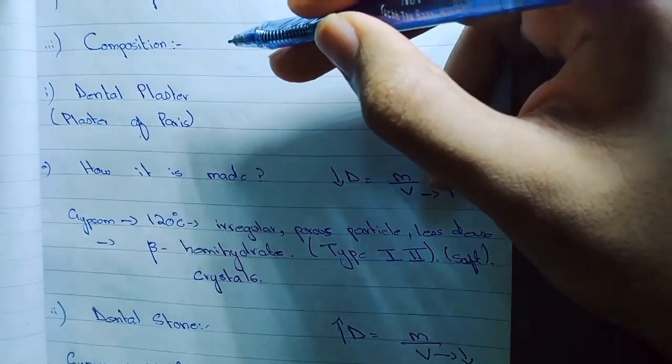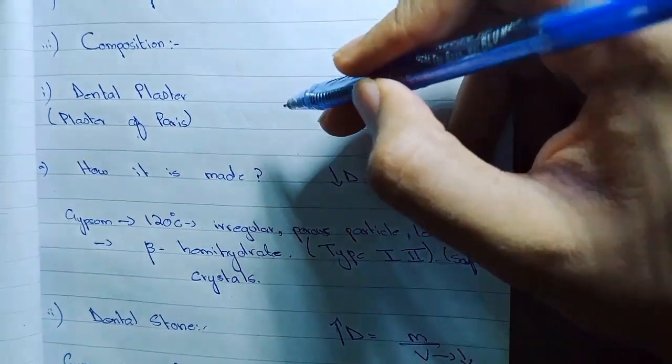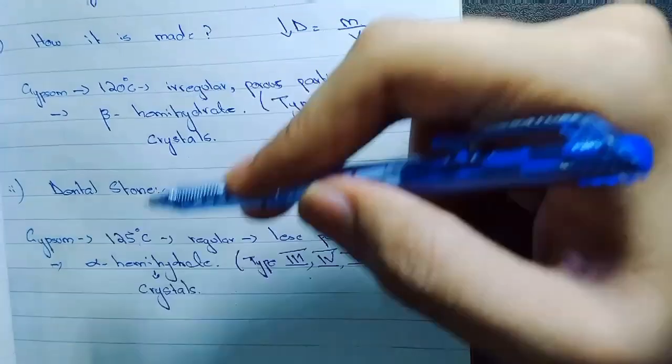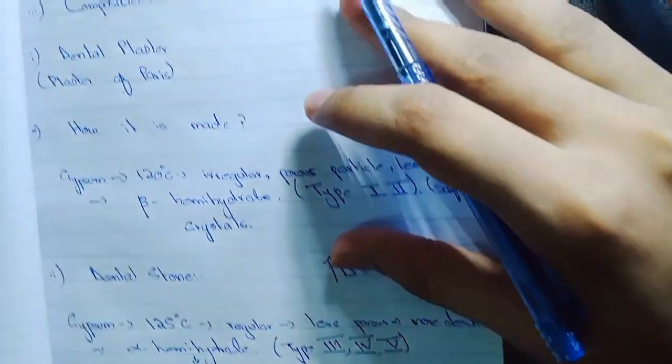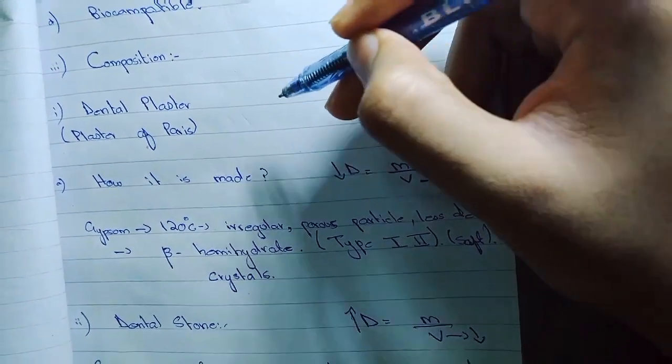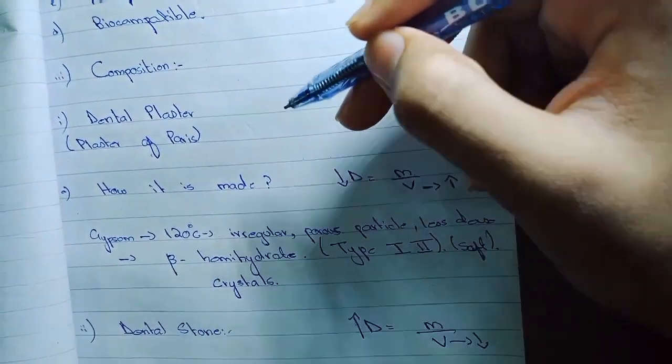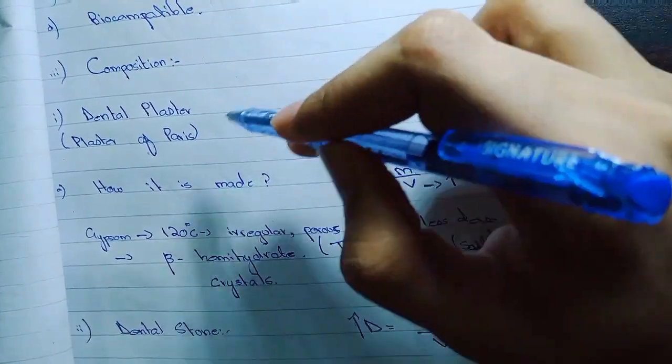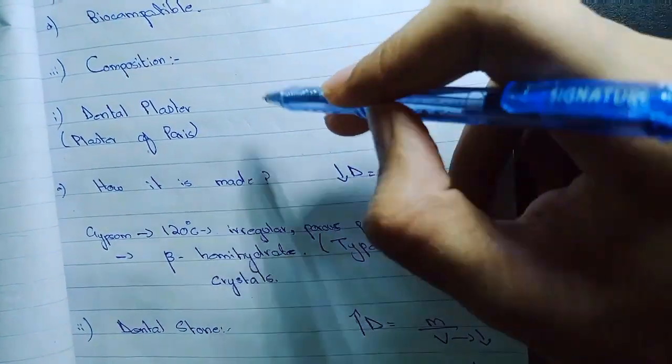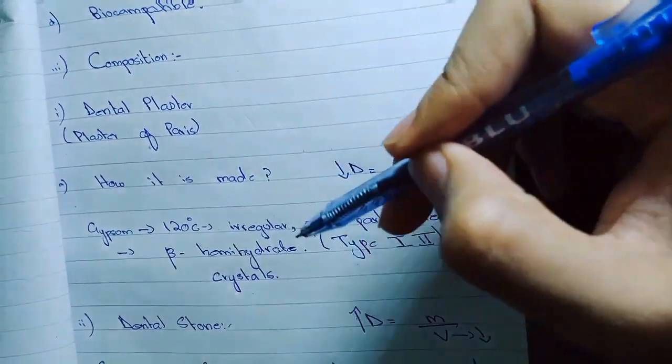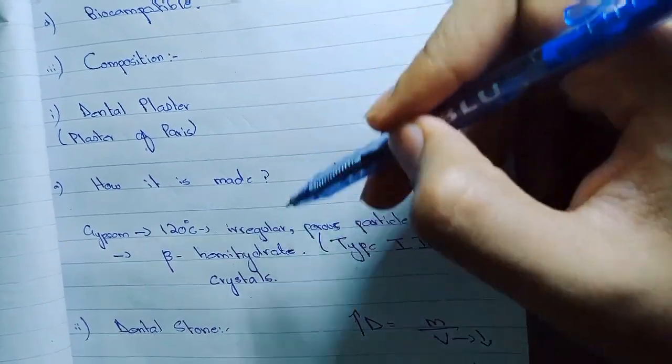Now the composition. Before telling that how dental plaster and dental stone is made, I want you to acknowledge that the gypsum powder which we get in the laboratory is the calcium sulfate hemihydrate. We mix it with water, it undergoes a chemical reaction and becomes calcium sulfate dihydrate. Then we can pour into the impressions so we can make models or dies.